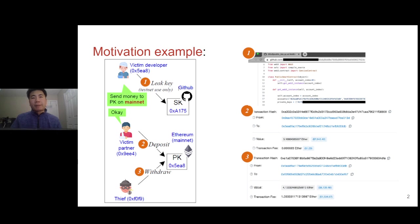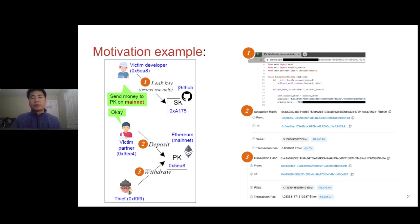In public blockchains, a user's crypto assets are stored under the user's public key, and asset safety relies on secret keys. Victims will lose their assets if their secret keys are exposed. Look at this example: a victim disclosed a leaked key on GitHub in a tutorial to show how his tool works in the blockchain.